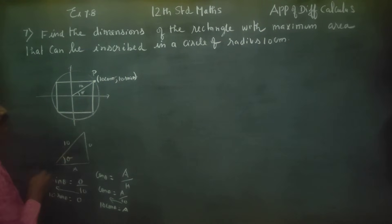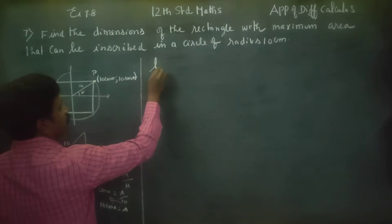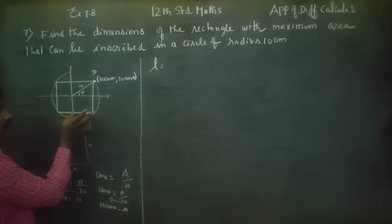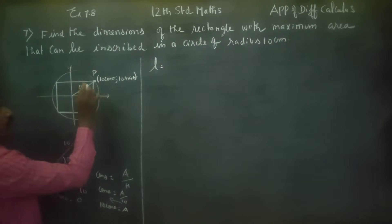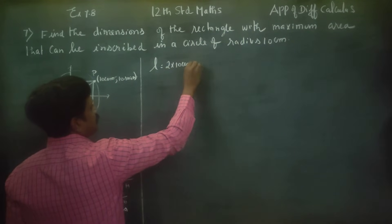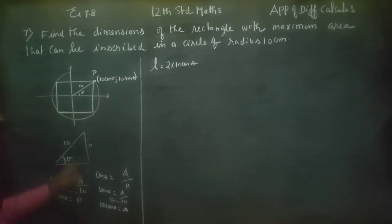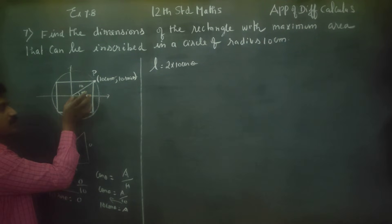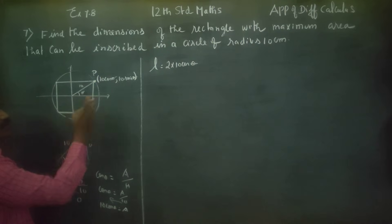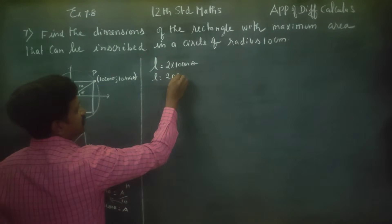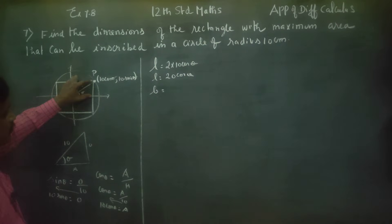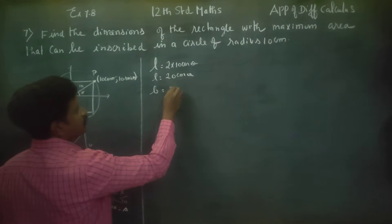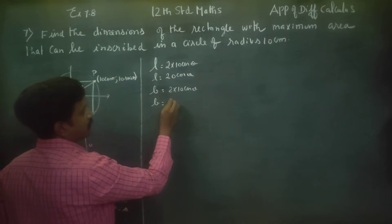The length of the rectangle equals two times the x-coordinate, which gives length = 2 × 10 cos theta = 20 cos theta. The breadth equals two times the y-coordinate, giving breadth = 2 × 10 sin theta = 20 sin theta.